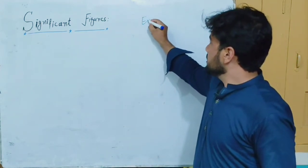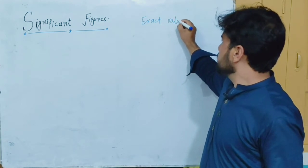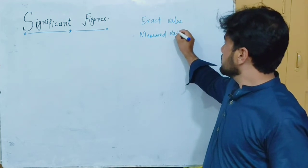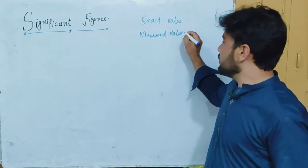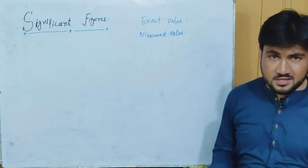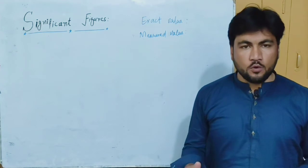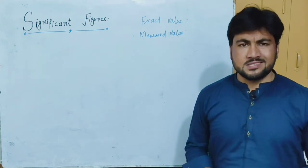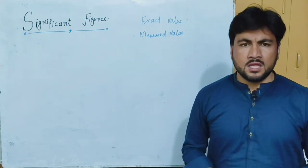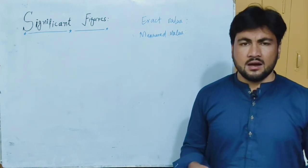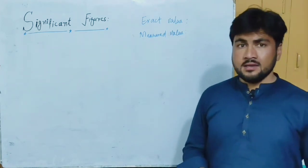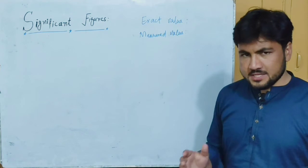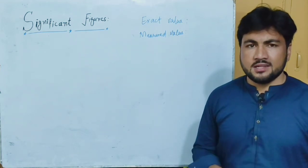The first is called exact value, and the second is called measured value. With exact value, if we count something — for example, a number of pins, pencils, or any discrete quantity — we can count them exactly. But when we use an instrument to measure something, that measurement may not be perfectly accurate; there can be some doubt or error in it.